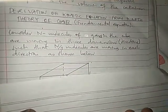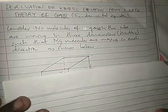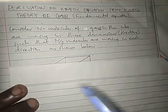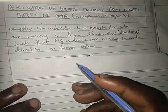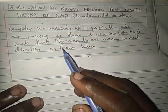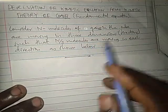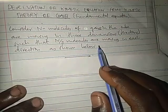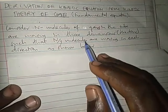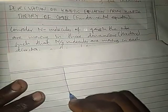Now, let's look at the derivation of the kinetic equation from kinetic theory of gases. Or sometimes it is called the fundamental equation. Let's look at the derivation. Consider any molecule of gases in a cube moving in three-dimensional direction such that N divided by three molecules are moving in each direction.